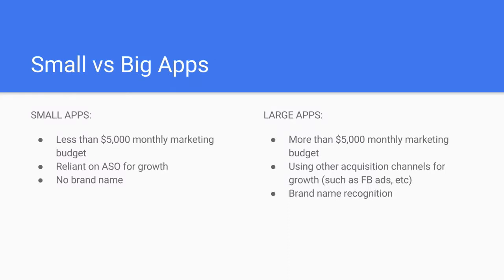Before we start, let's differentiate what makes a small app versus a large app. Smaller apps tend to not have much of a marketing budget — they're really relying on ASO for growth. They have anywhere from zero to less than $5,000 spending on app marketing. So they're not doing too much; they're very much reliant on ASO. And lastly, they don't have too much brand recognition.